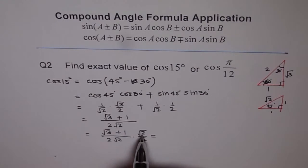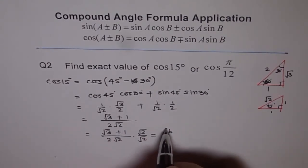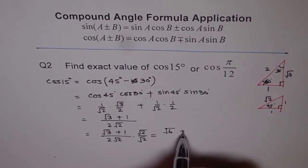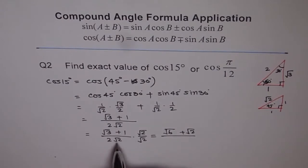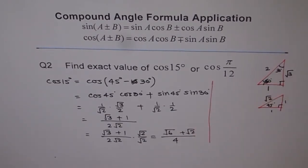So let's do distributive property in the numerator. Square root 2 times square root 3 is square root 6 plus square root 2 divided by square root 2 times square root 2 is 2 and 2 times 2 is 4. So that is our answer. Perfect. So that's how we do this in degrees.